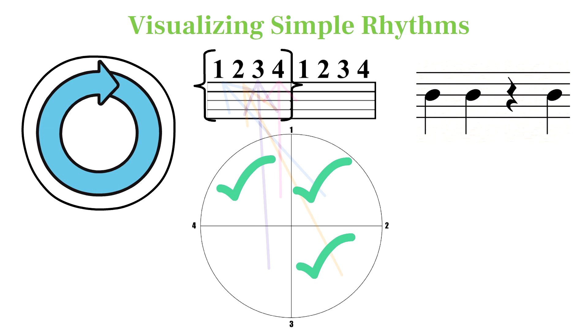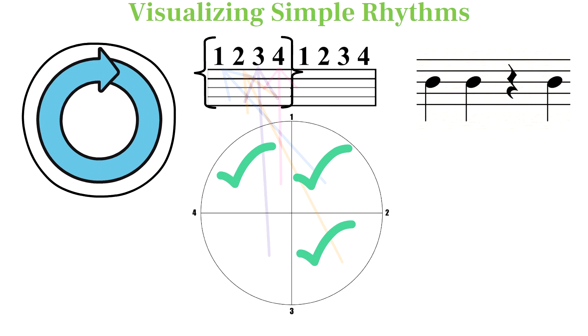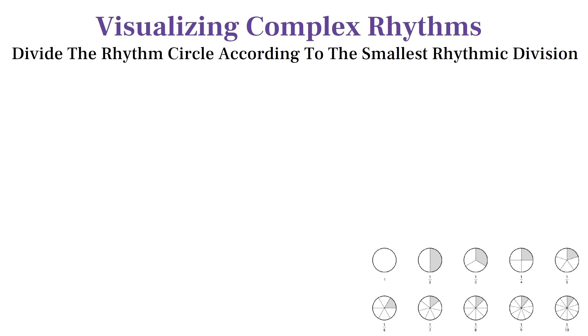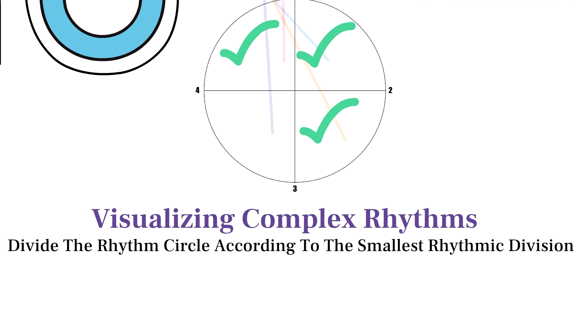Here's how beats 1, 2, rest, 4 would look. To represent a complex rhythm, we have to divide the rhythm circle into as many pieces as the smallest division present in a given rhythm, or fastest rhythmic unit.